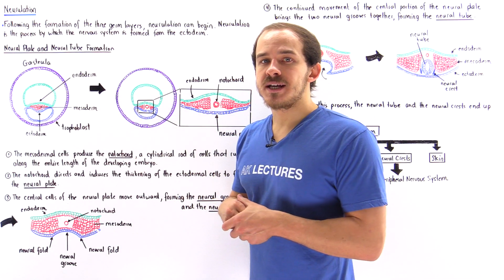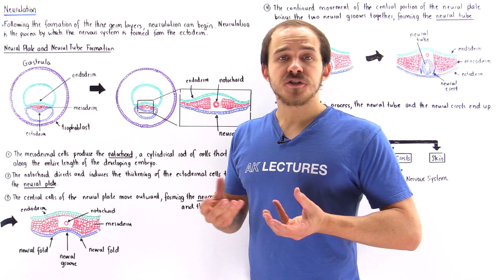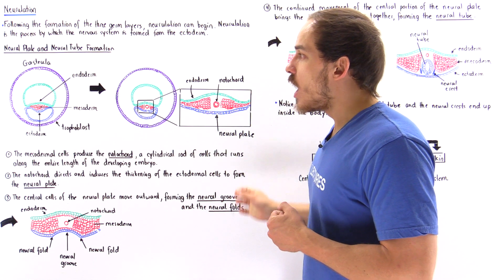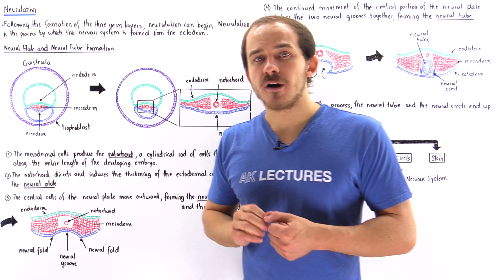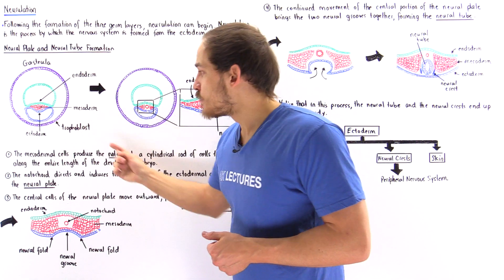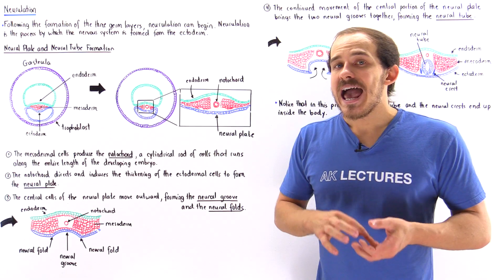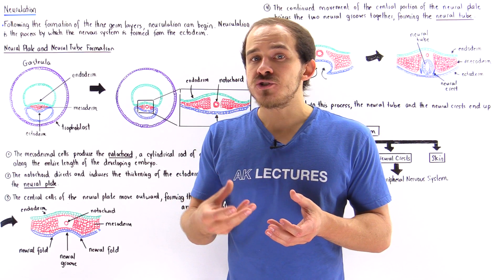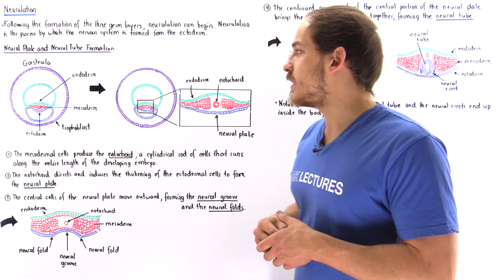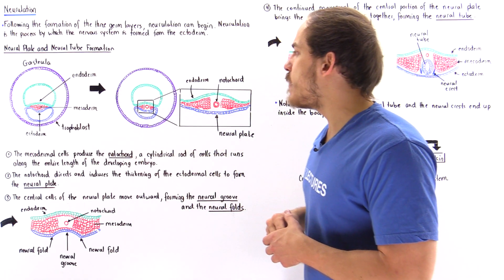Before these blue cells can organize themselves and differentiate into the cells that ultimately make up the central and peripheral nervous system, a structure known as the notochord must form. The notochord is formed from the cells found in the mesoderm germ layer. The mesodermal cells form a cylindrical rod of cells that runs along the entire length of the developing embryo. In this diagram, we form the notochord from these red mesodermal cells.